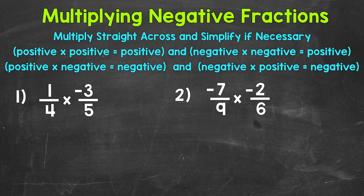Multiplying negative fractions is the same process as multiplying two positive fractions — we multiply straight across. The only difference is we need to make sure we have the correct sign for our product. The rules for multiplying positive and negative integers apply to fractions as well.